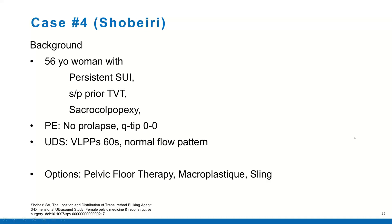My guess is this patient — particularly the fact that she had a sacrocopexy and then at the same time a TVT that did not work, and she's got this no urethral mobility — I would almost be concerned that perhaps with the sacrocopexy she had been a little hyper-suspended. Those can be very difficult to fix with a mid-urethral sling, because you either end up obstructing them — you almost have to make it tight. So this is a case that I would absolutely go with a bulking agent.